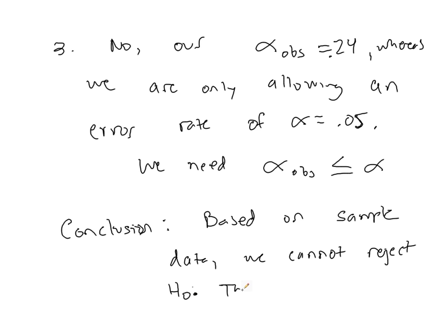There is not convincing evidence that pi, the true population success rate, is greater than 0.75. So, we're not saying it isn't, but this sample just didn't really convince us of that. Because if the success rate is 75%, the alpha observed that we got is something we'd expect.